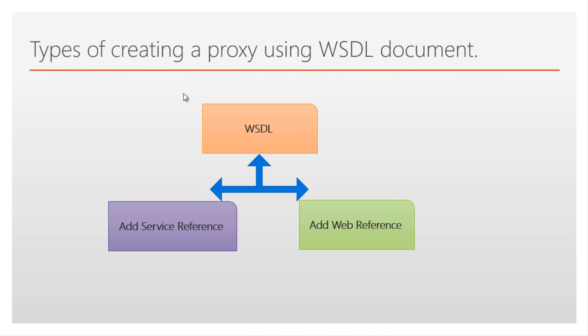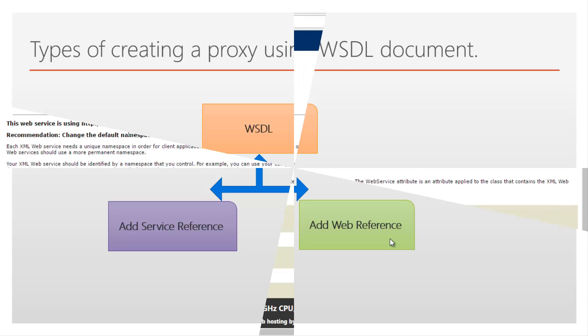There are two different ways we can create a proxy in the client application and call the web service: by Add Service Reference and by Add Web Reference. These are the two different types we can use to create and call the web service from Visual Studio. Let's look at this in action by creating a proxy in the client application.